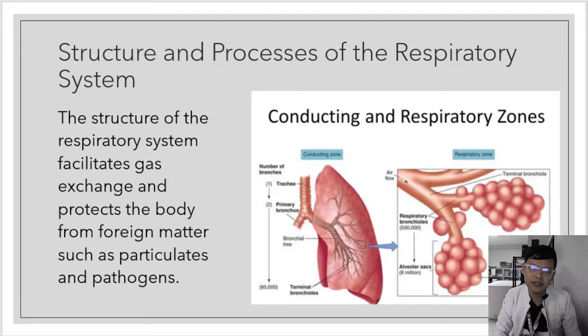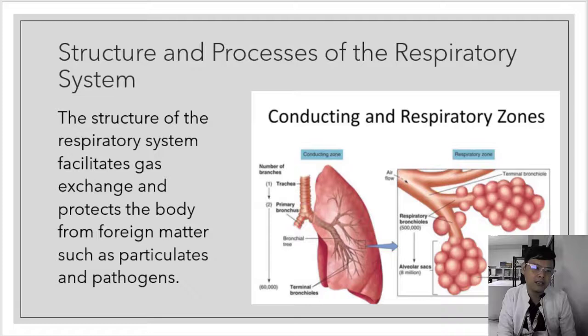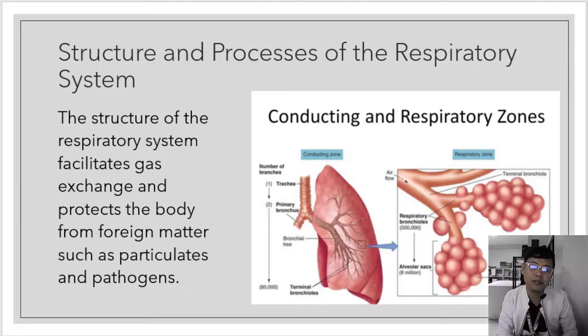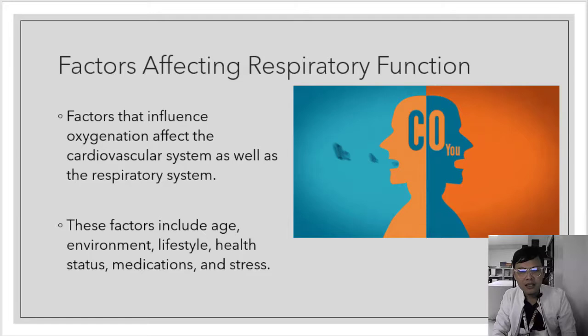Let's talk about the structure and process of the respiratory system. The structures facilitate gas exchange and protect the body from foreign matter such as particulates and pathogens. For example, when food accidentally enters the trachea instead of the esophagus, passing the epiglottis, the body causes coughing — that is actually a defense mechanism to expel those particulates and pathogens.